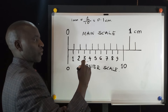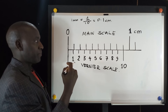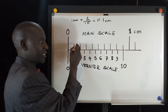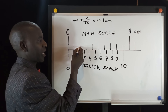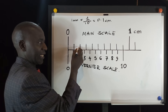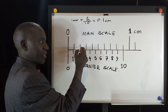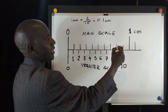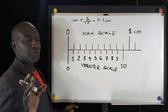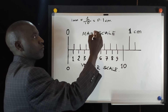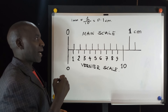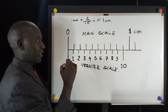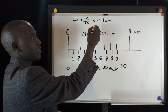So on a meter rule, we count in terms of 0.1 centimeter. Starting from 0, from here to here is 0.1 centimeter, then 0.2 centimeters, then 0.3 centimeters, and so on until we get one centimeter. We are moving in steps of 0.1 centimeter — this is the smallest division on a meter rule. So we can comfortably say that the least count on a meter rule is 0.1 centimeter.